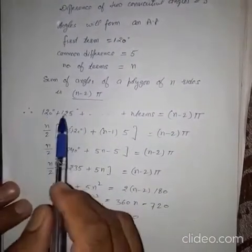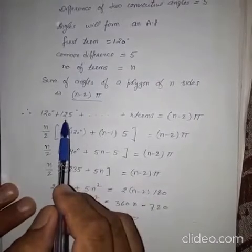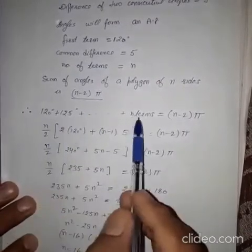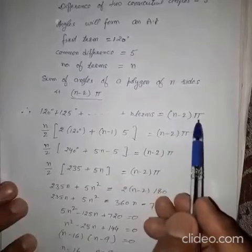So, it means sum of the angles. First angle 120. Second angle 5 degree greater means 125. And so on up to N terms. The sum should be equal to N minus 2 into pi.